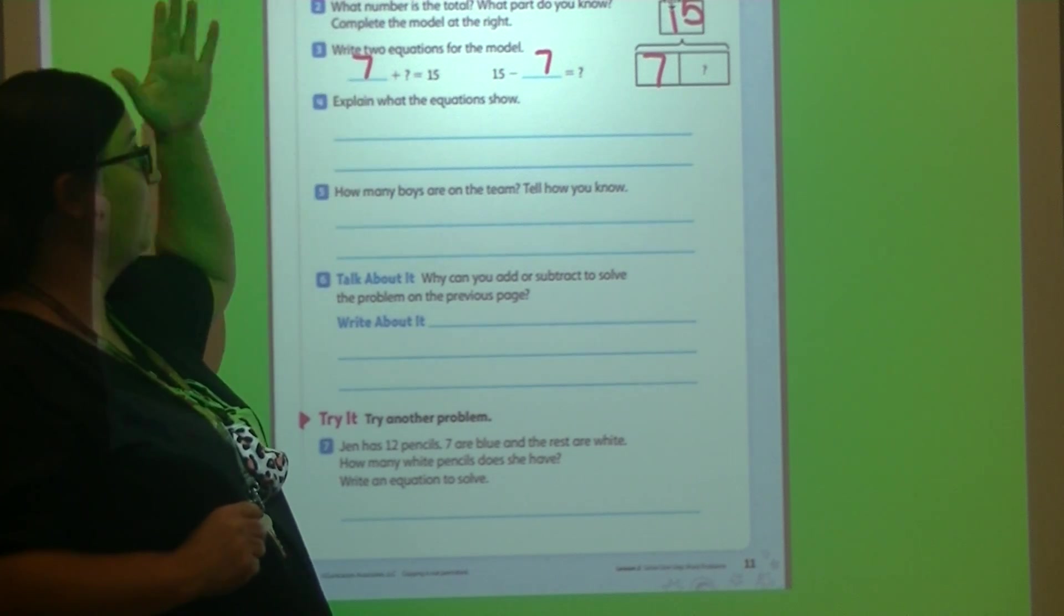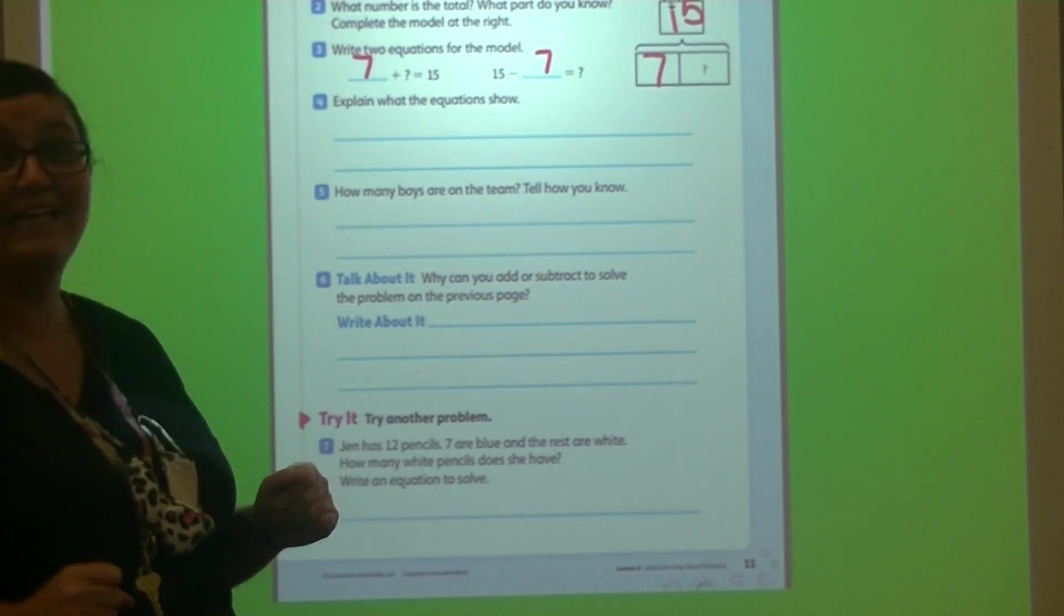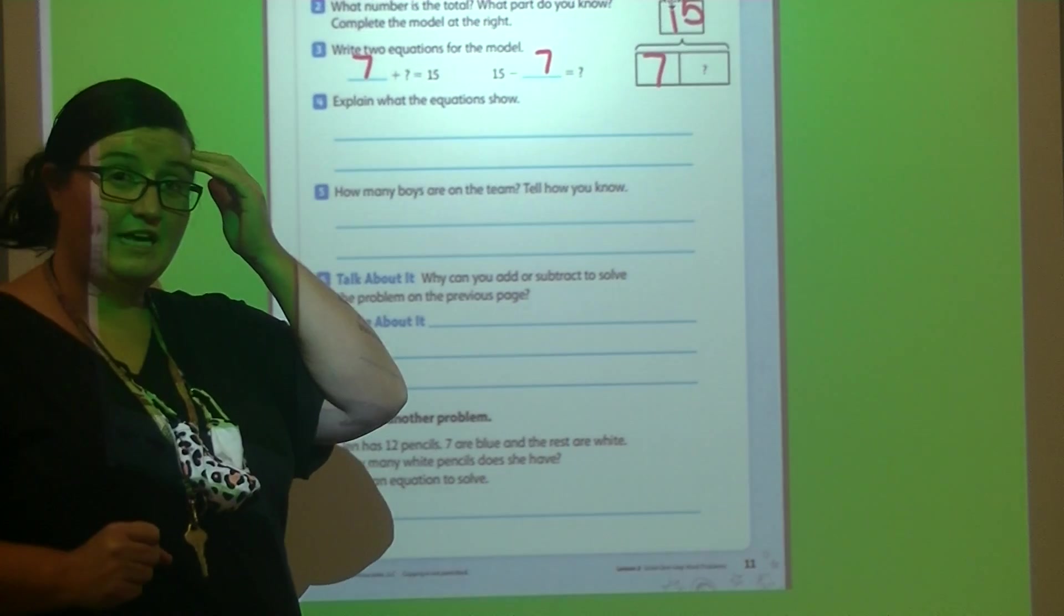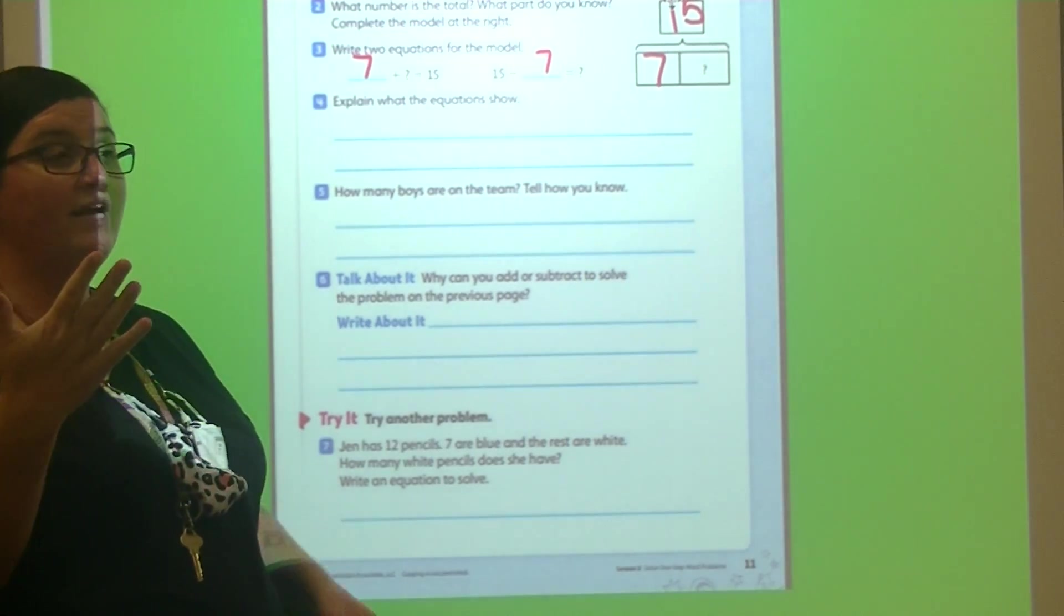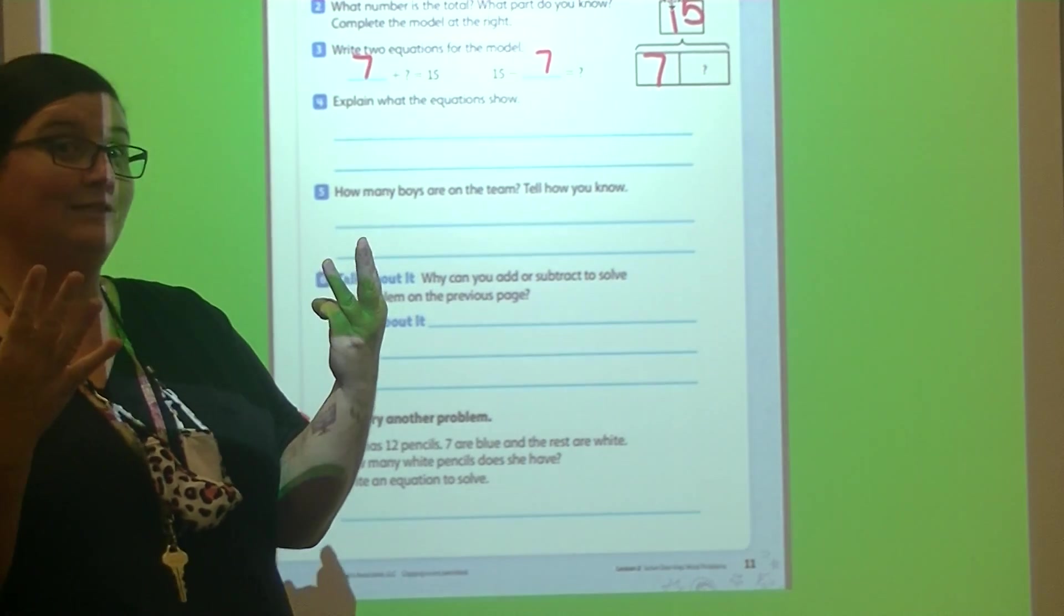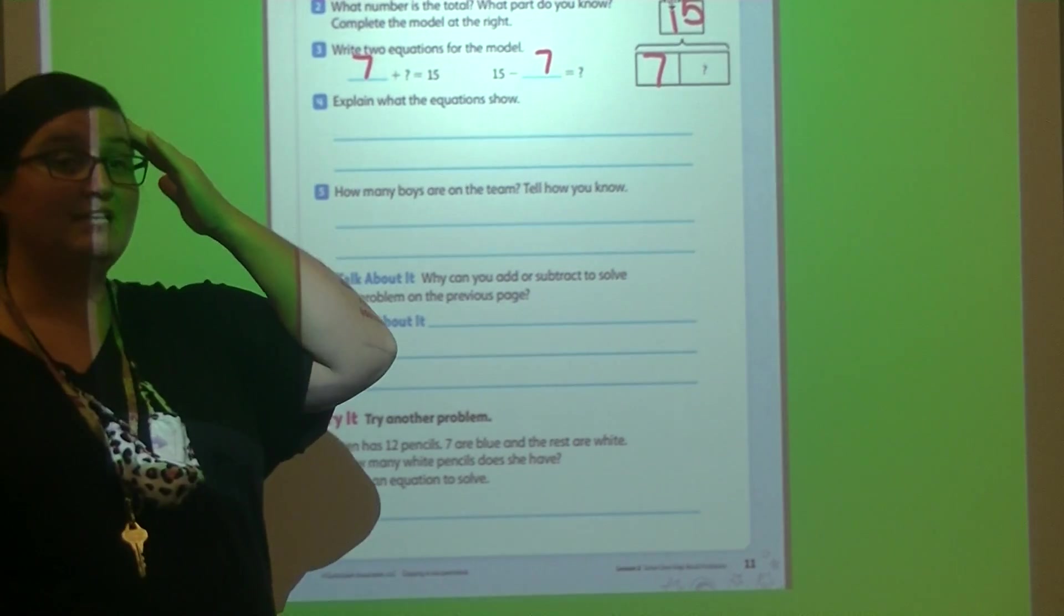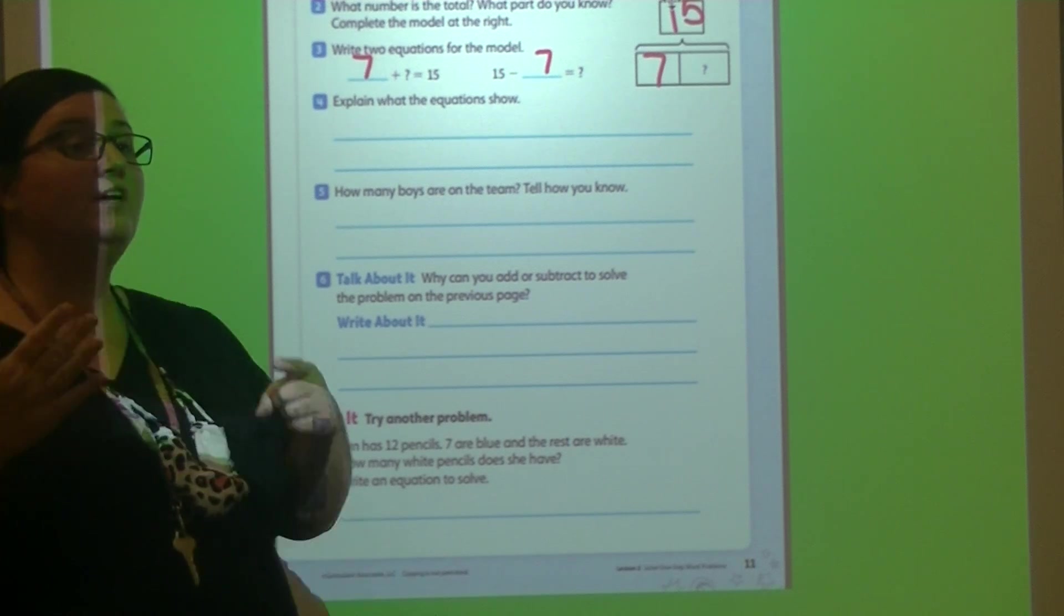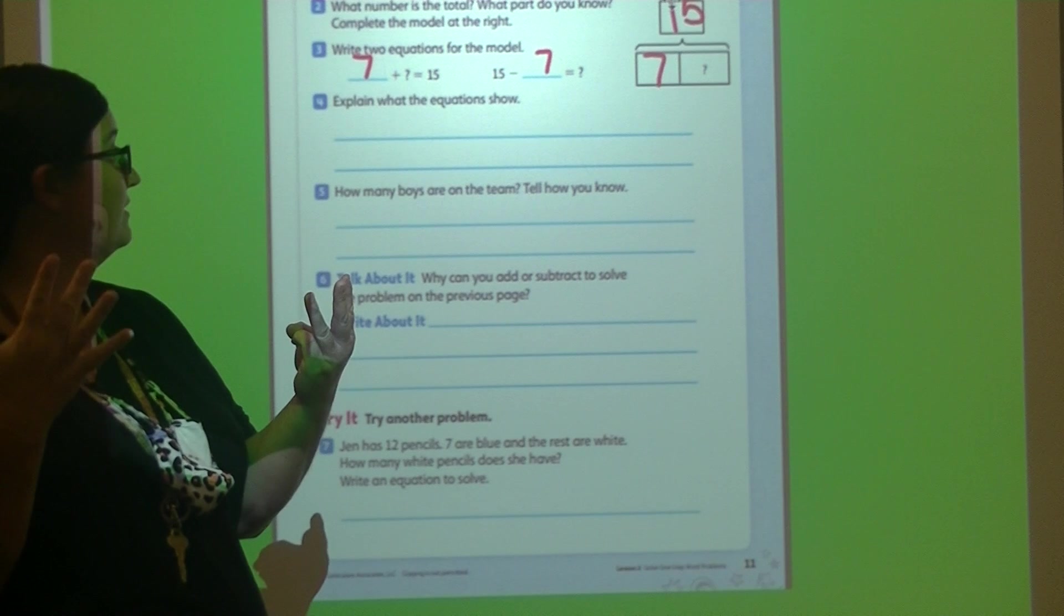So we can count on. Start with 7 in our heads, count on until we get to 15. Start with 7. Get ready. 7, 8, 9, 10, 11, 12, 13, 14, 15. Let's do it one more time. 7 in your head. 7, 8, 9, 10, 11, 12, 13, 14, 15. What answer did we get?